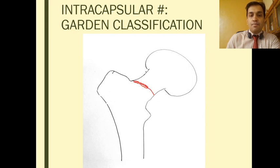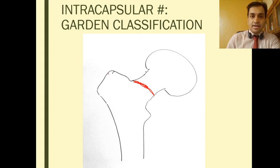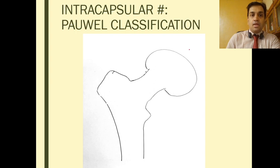Garden Type 2 is a complete fracture which is non-displaced. Garden Type 3 is a complete fracture which is partially displaced. Garden Type 4 is a complete fracture which is completely displaced.